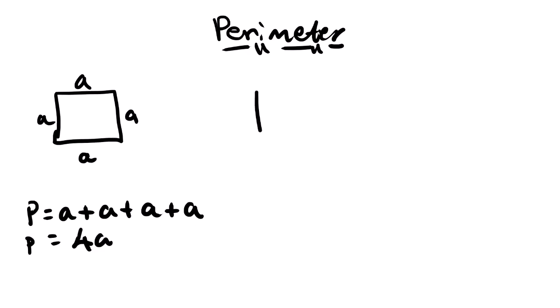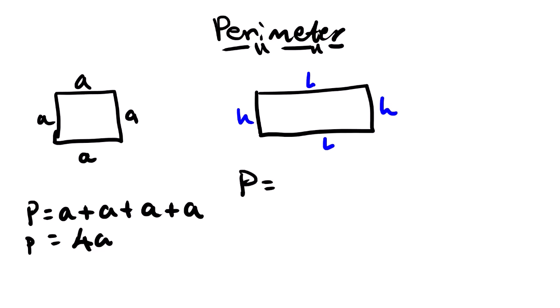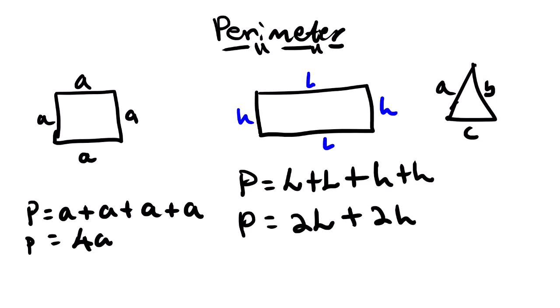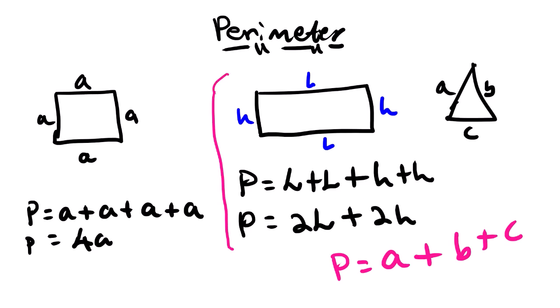For the rectangle, we have the height and the length. We know that the property of a rectangle is that opposite sides are the same, so the perimeter will be length + length + height + height, which gives us 2l + 2h. And for a triangle with sides a, b, c, the perimeter will be a + b + c. What is important for today is the rectangle equation since we are dealing with a rectangle shape.